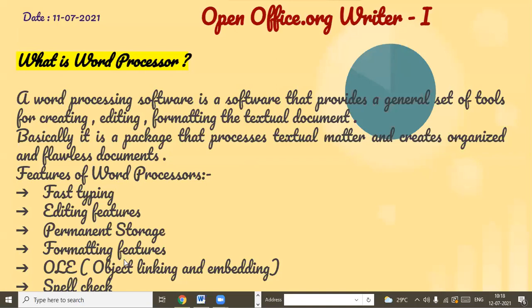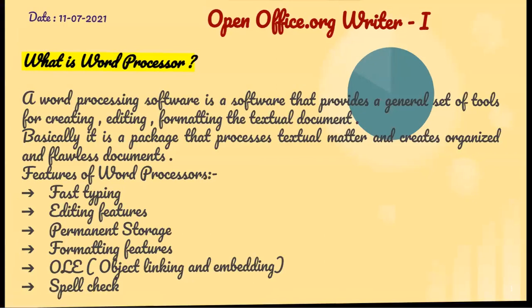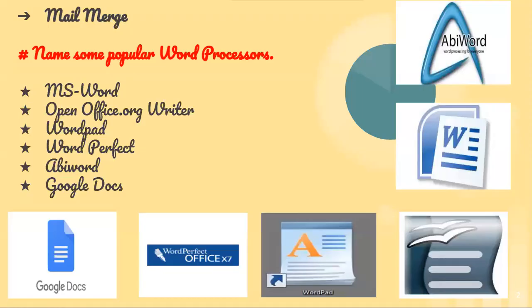There is one more feature called mail merge. What is mail merge? Suppose a company has given an advertisement for a job and many persons from different areas applied. The company has shortlisted 20 candidates and needs to send an invitation call letter to 20 persons. One solution is to type the same email 20 times — that is a wastage of time. So mail merge is there: the letter is typed once and at one time you can send it to multiple persons. That is called mail merge.